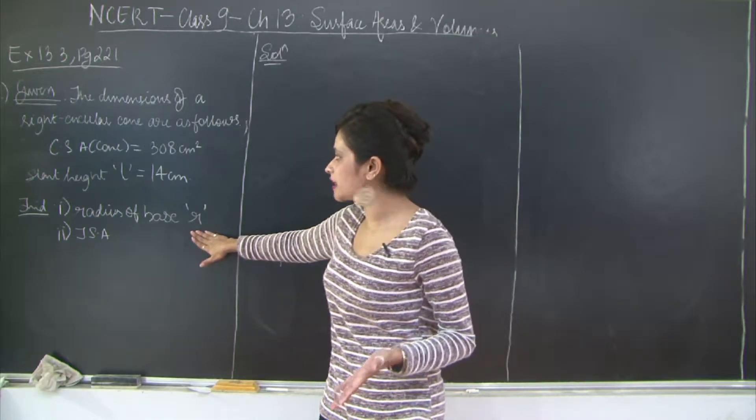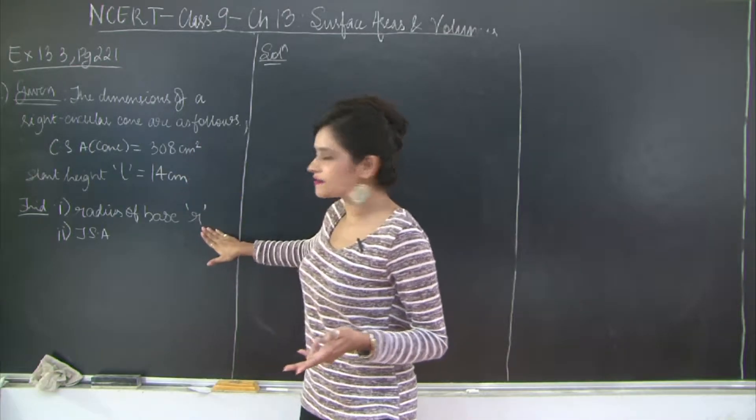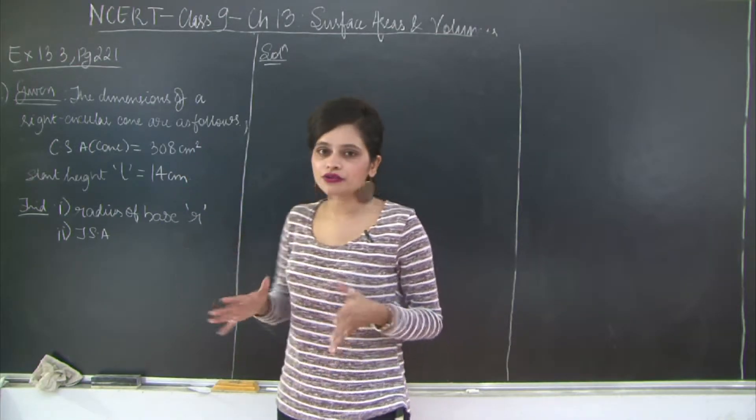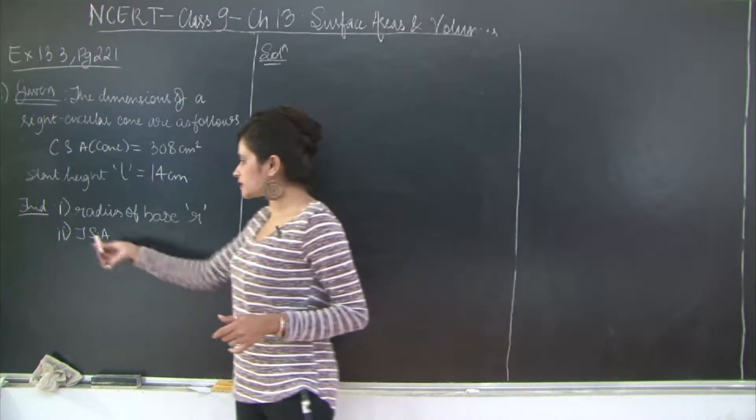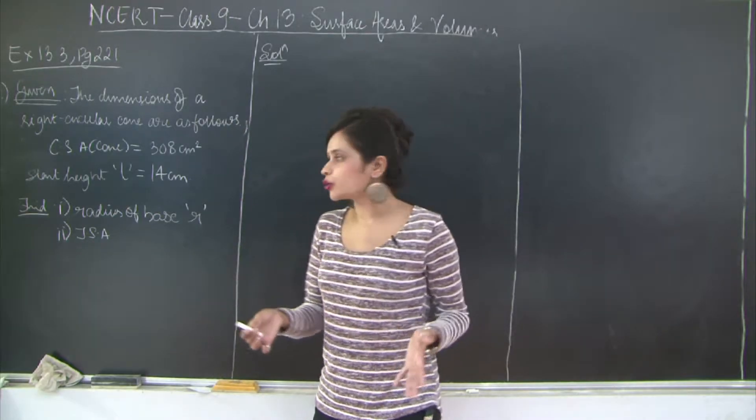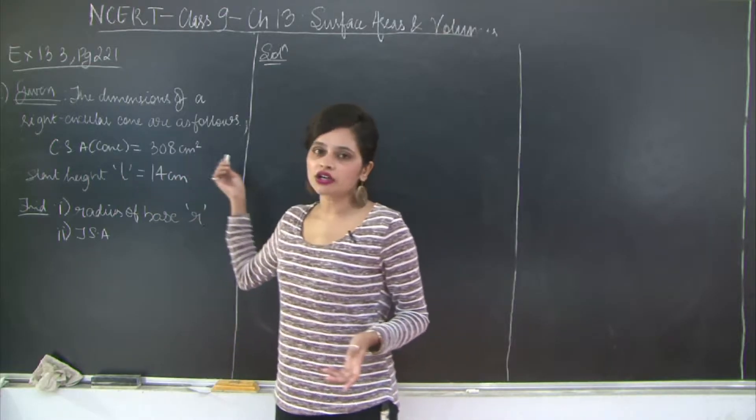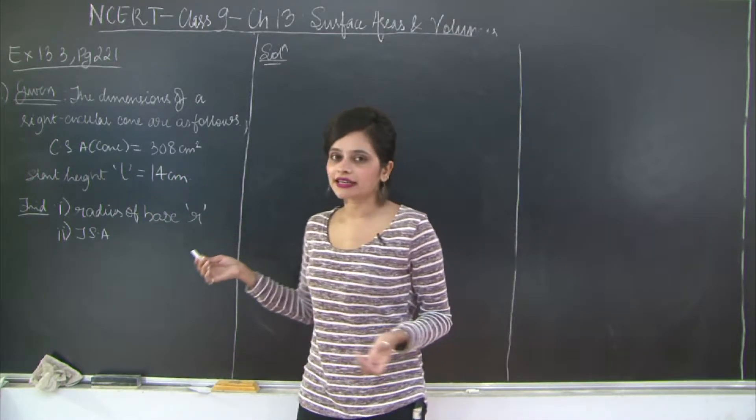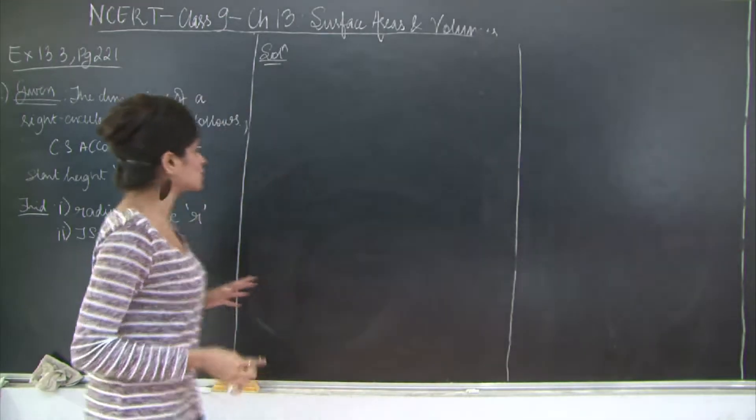So what we need to do is substitute the values of curved surface area, the length, and this unknown variable R into the formula of curved surface area in order to find the base radius. And total surface area can be found out using the formula π r into L plus R, or you can simply find the base area that's π r² and add it to the curved surface area. Because total surface area is curved surface area plus the area of the base. So let's do this sequentially.